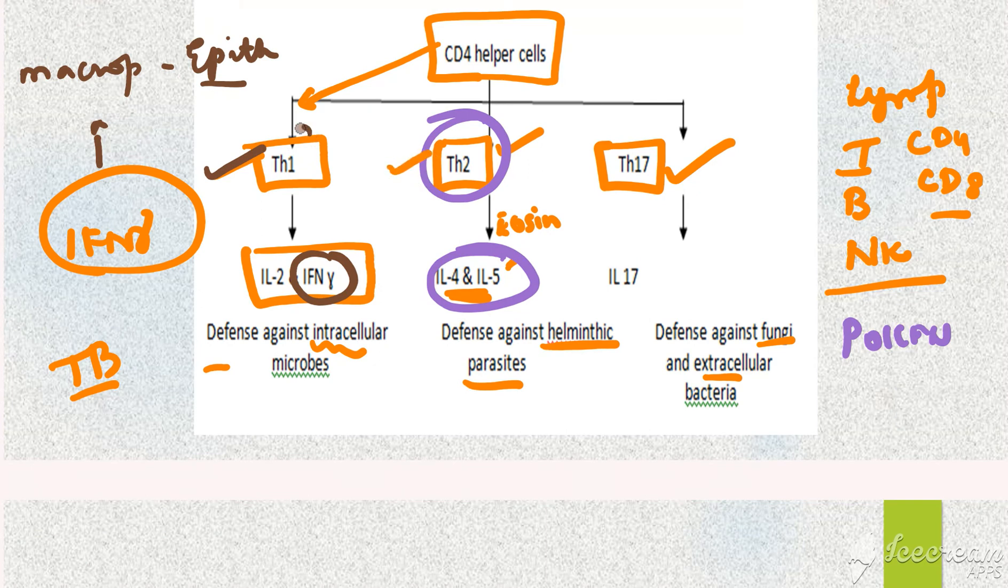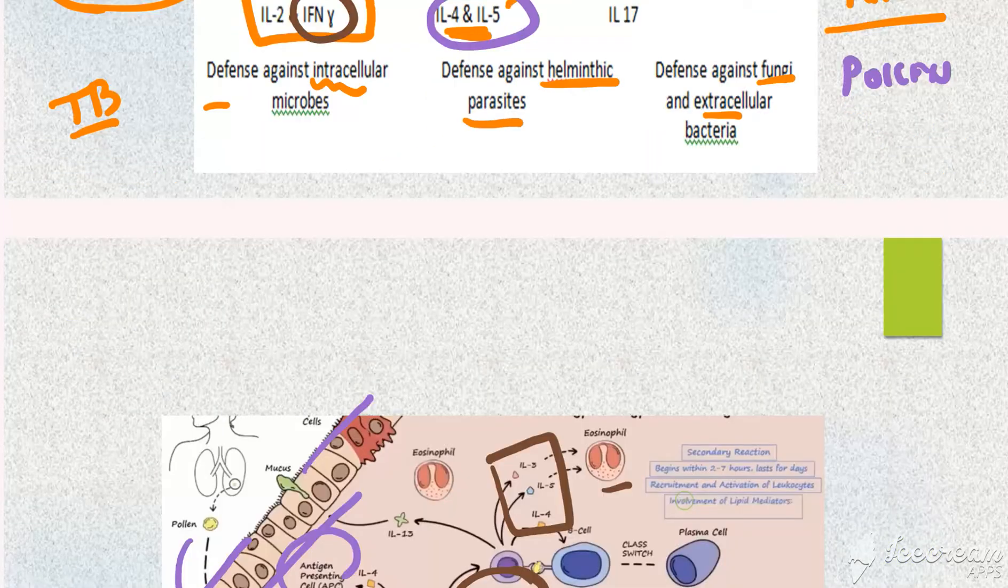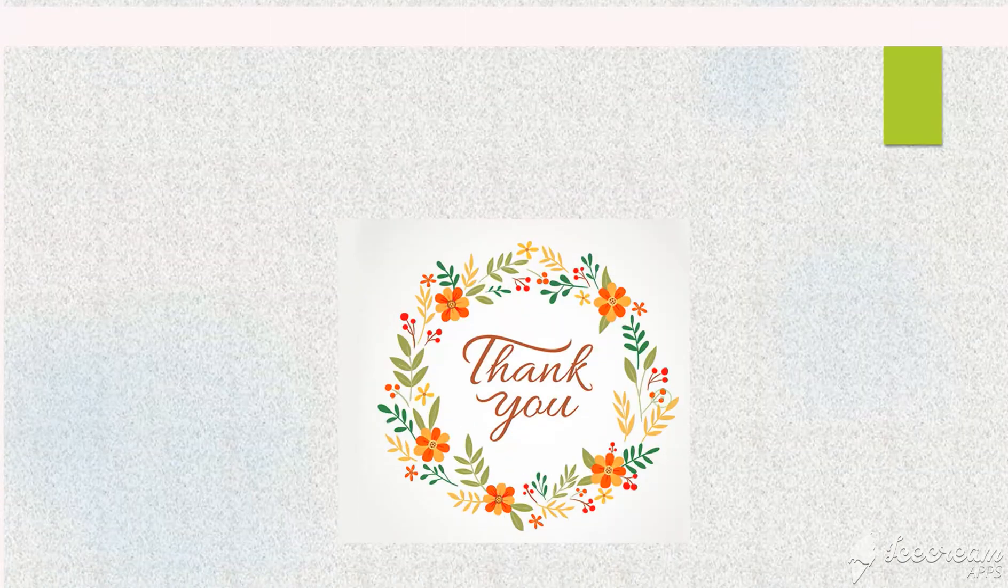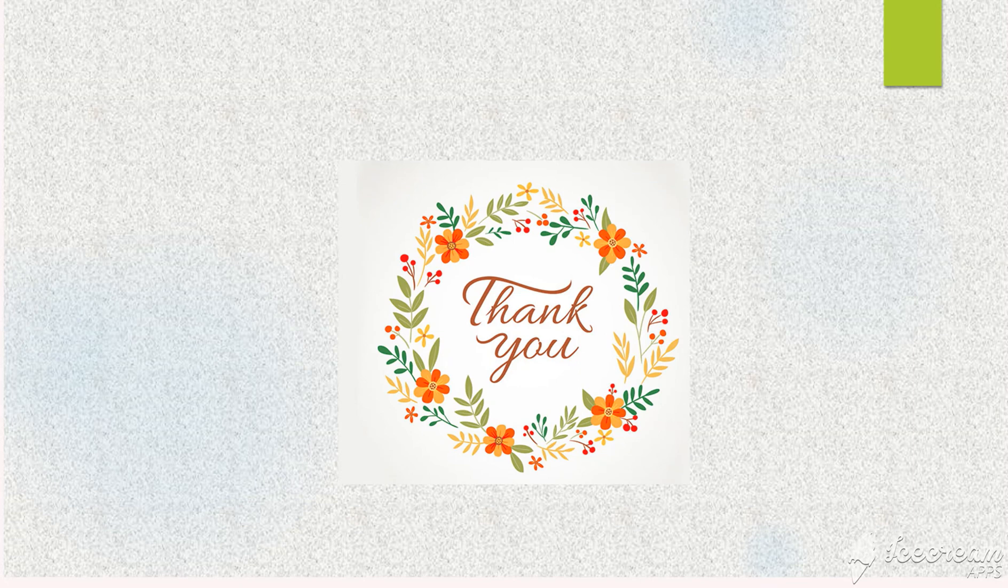In asthma also T helper 2 cell gets activated, whereas in tuberculosis T helper 1 cell gets activated. This is the basics of immunology. I hope you understood about the mechanism of activation of various CD4 cells. Thank you.